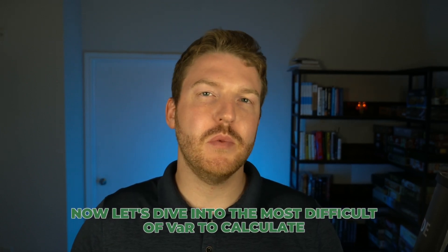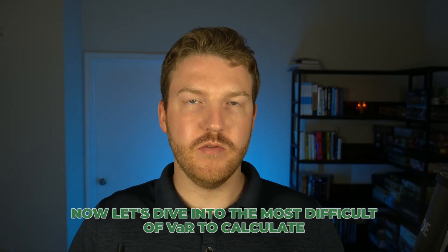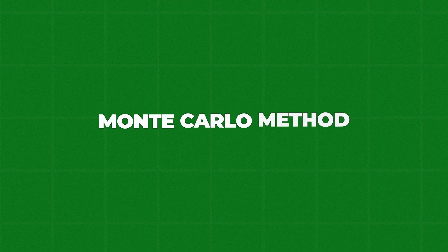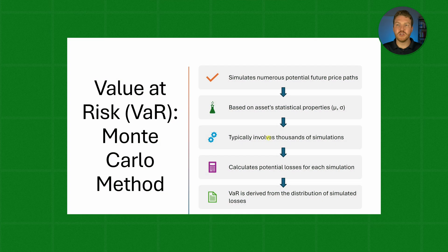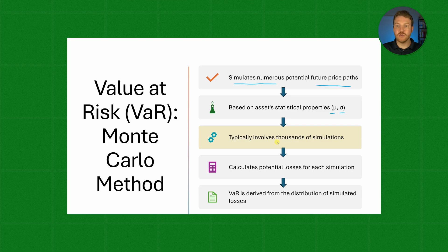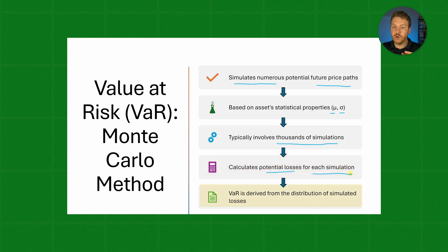Now let's dive into what's probably the most difficult method of VAR to calculate: the Monte Carlo method. Basically, we're going to simulate numerous potential future price paths. These paths are going to be based on the mean and the standard deviation. We might run thousands of different simulations and calculate potential gains or losses for each, then look at all those values and find the VAR at the percentile we're interested in.